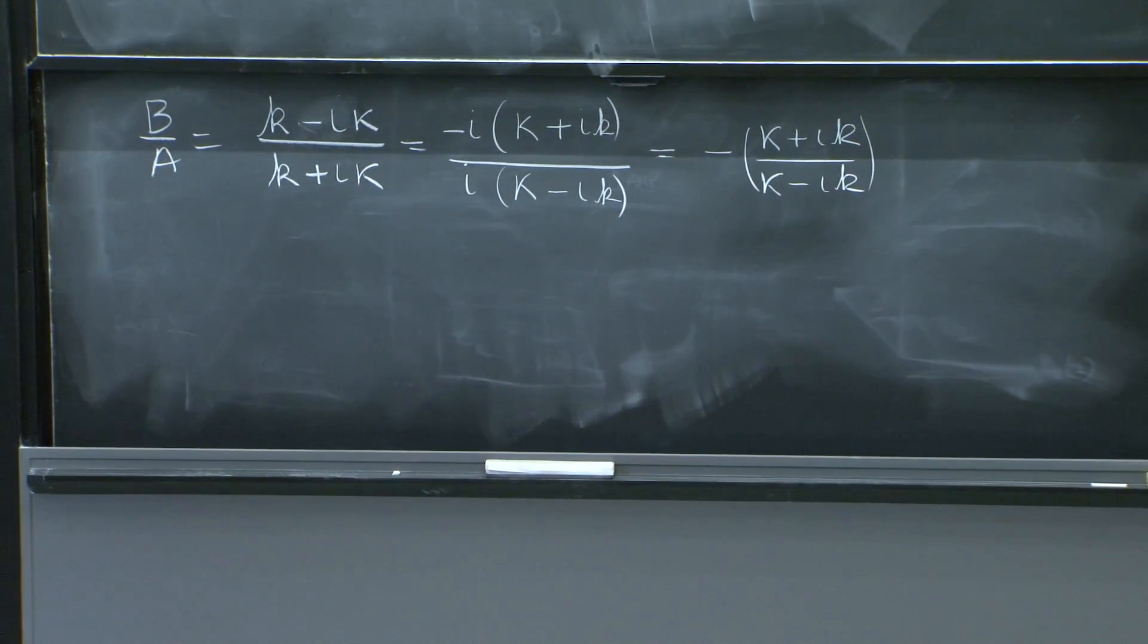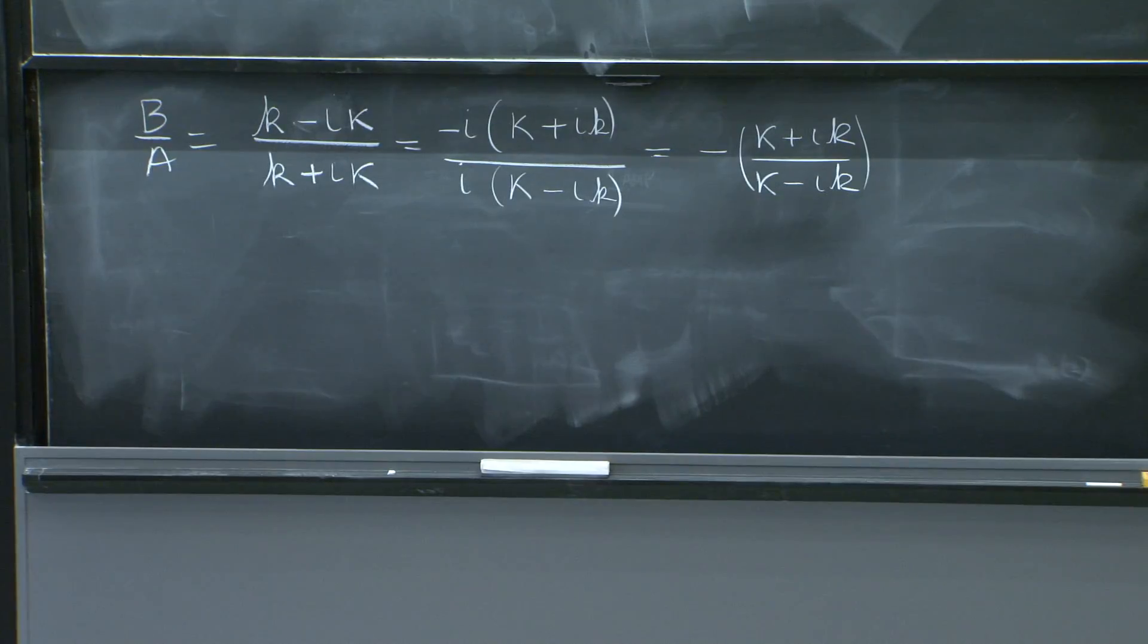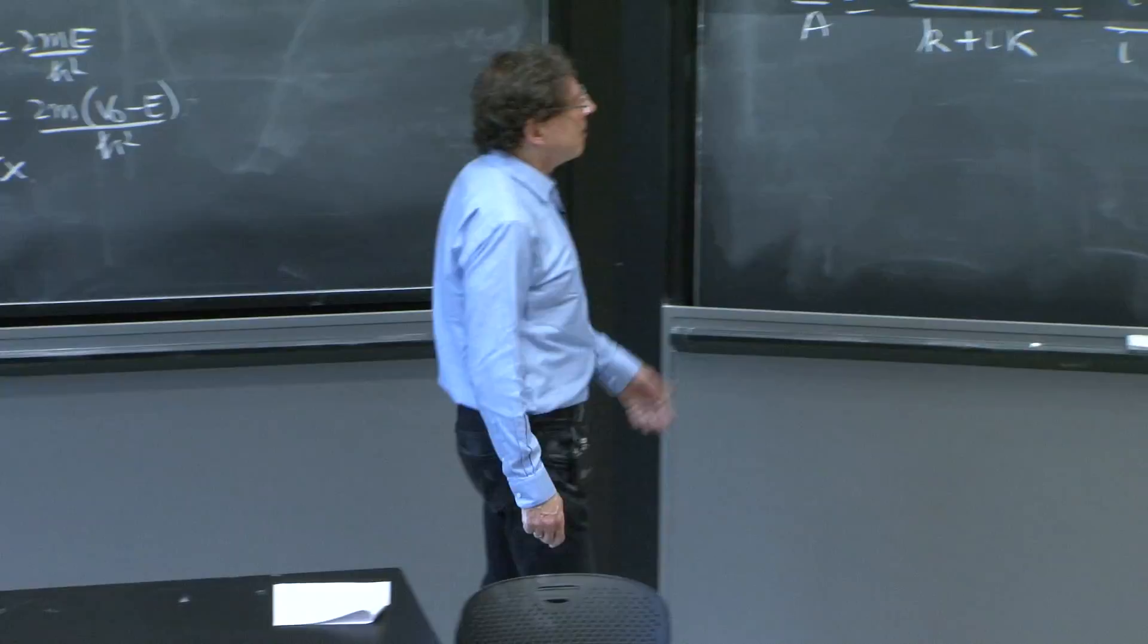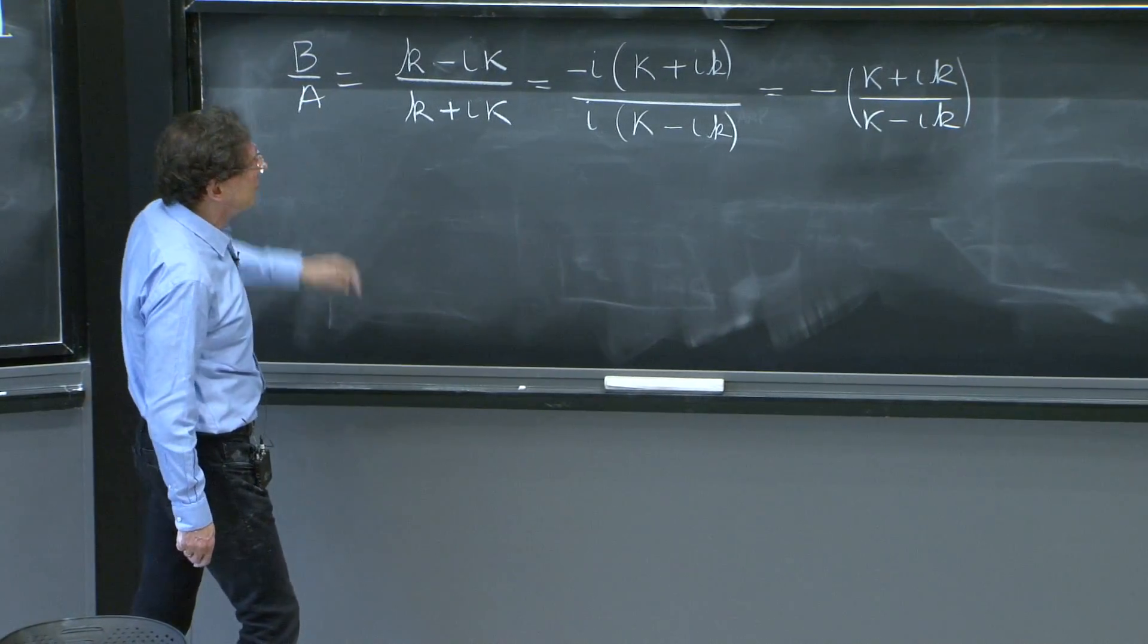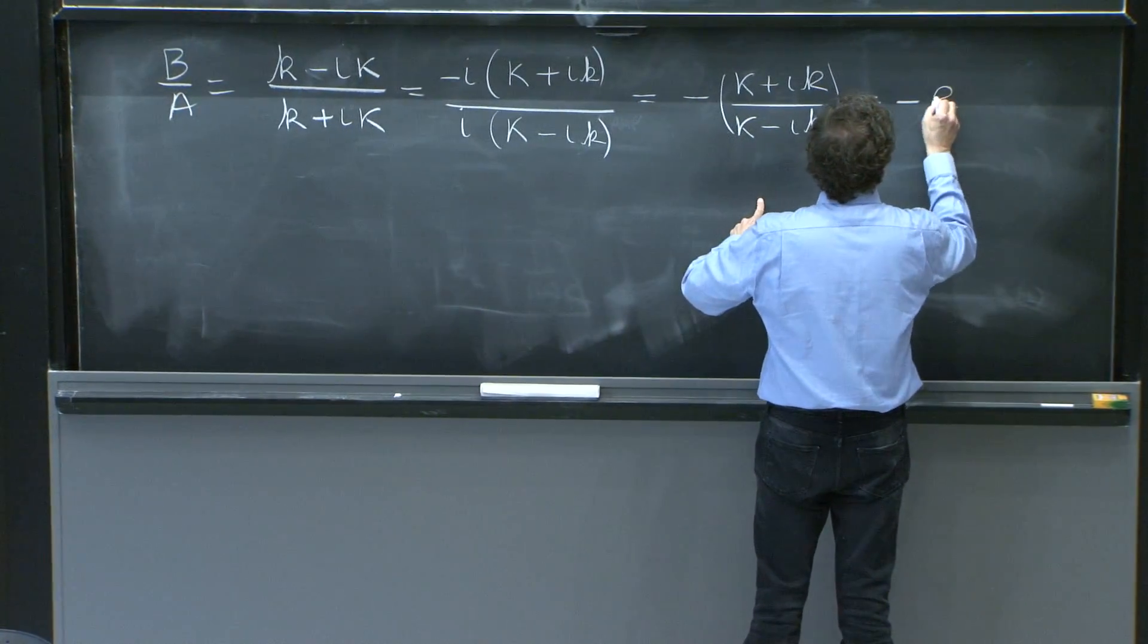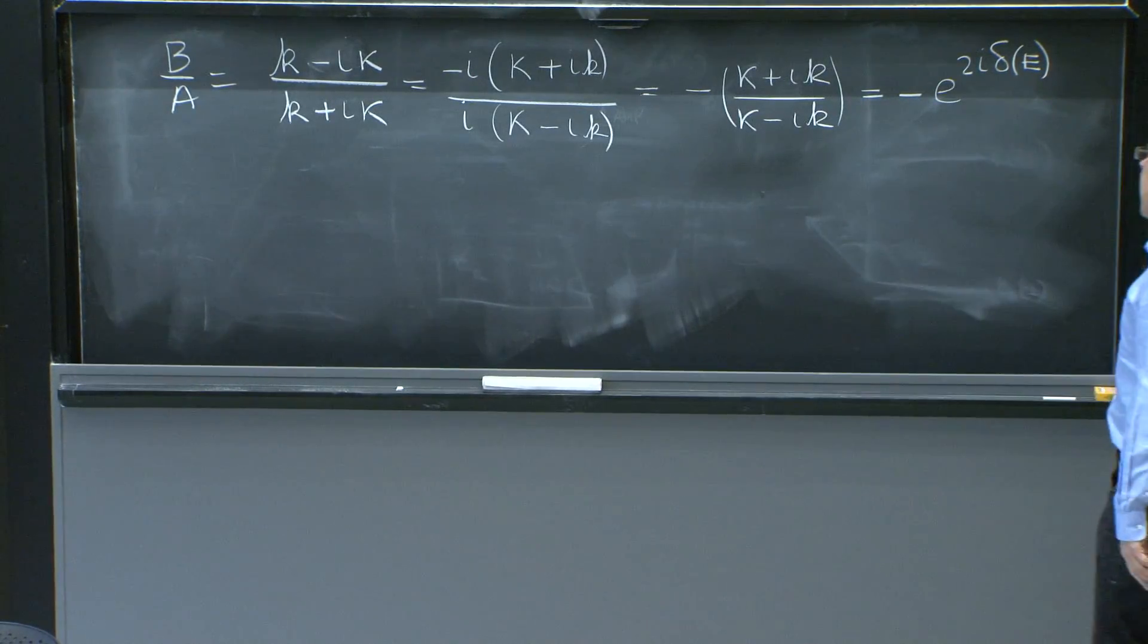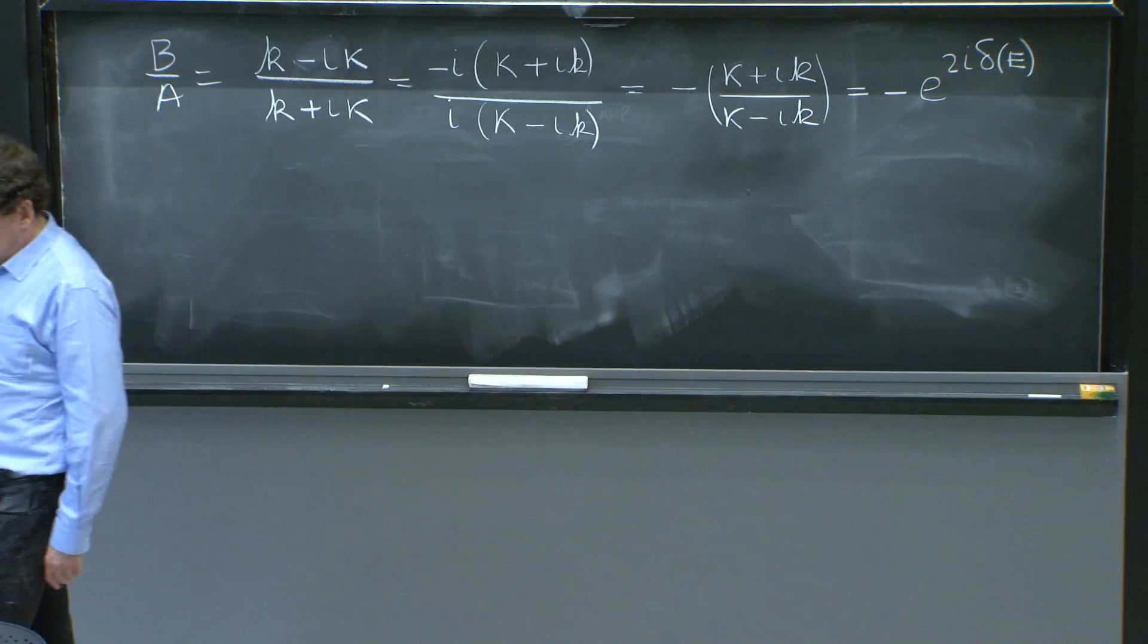But when you see that ratio, you're seeing the ratio of two complex numbers of equal length. And therefore, that ratio is just a phase. It's not any magnitude. So this is just a phase, and it deserves a new name. There's a phase shift between the b coefficient and the a coefficient. And we'll write it as e^(-2iδ), the minus I'll keep, e^(2iδ). That depends on the energy. I'll put δ of the energy, because after all, κ, k, everybody depends on the energy. So let's call it 2iδ(e).